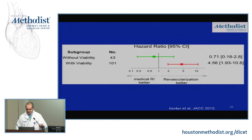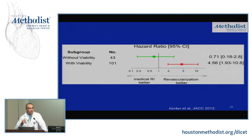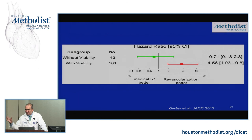Limitations include the fact that — like most other studies aside from STICH — these are non-randomized, observational studies, subject to selection bias. If a patient has significant viability but no surgeon or interventionalist is willing to revascularize them, selection bias comes into play. Our concepts of viability are continuing to evolve and we still don't have a complete understanding of how to interpret viability assessment. Thank you for your attention.